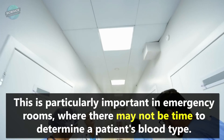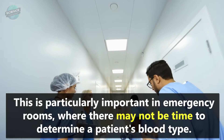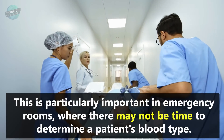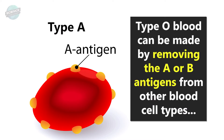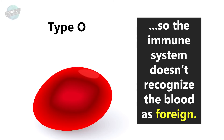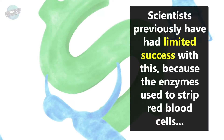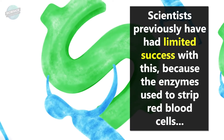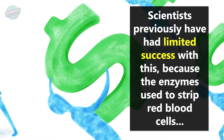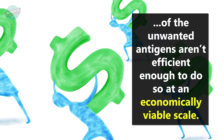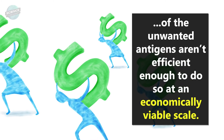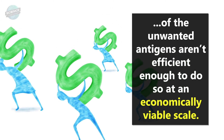This is particularly important in emergency rooms, where there may not be time to determine a patient's blood type. Type O blood can be made by removing the A or B antigens from other blood cell types, so the immune system doesn't recognize the blood as foreign. Scientists previously have had limited success with this, because the enzymes used to strip red blood cells of the unwanted antigens aren't efficient enough to do so at an economically viable scale.